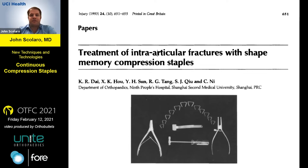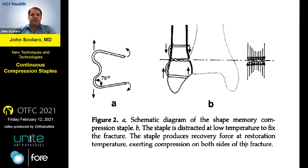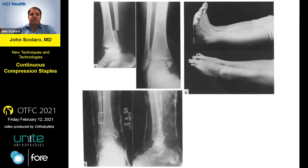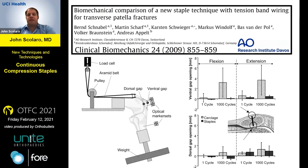They had a nitinol staple placed across transverse fractures to gain compression, almost like a tension band construct across fractures with well-opposed surfaces. They were using them in fractures we'd consider for tension band constructs today: transverse patella fractures, relatively simple proximal ulna or olecranon fractures, transverse medial malleolus fractures, and distal fibular shaft fractures — published in 1993, with a resurgence almost 30 years later.